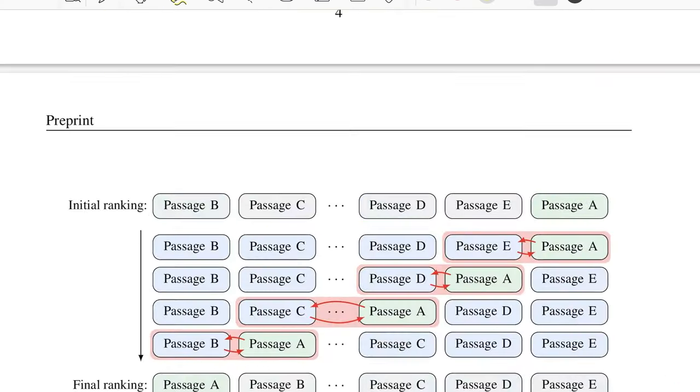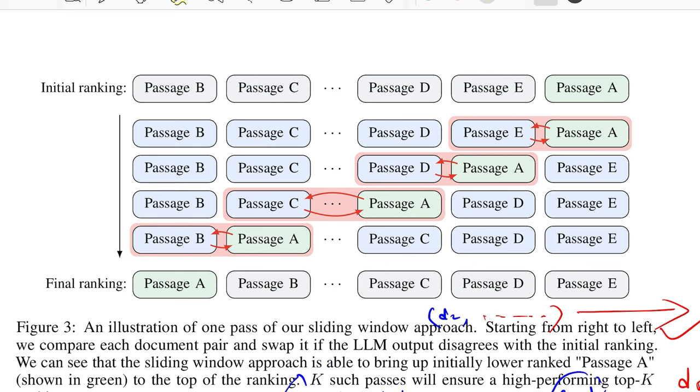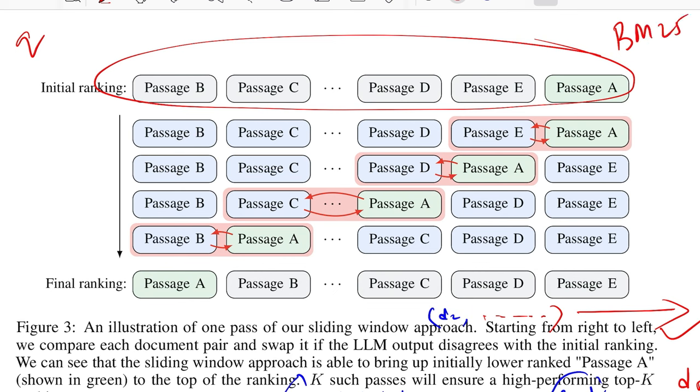This is an illustration of one pass over the entire list. Let's say you had query Q and these were the list of passages that you had, which is from B, C, something between, then finally D, E, A. This is an initial ranking that you get, let's say, from BM25. They have a sliding window of length two, which is marked in red over here, and a stride of one, which means it moves to its left by one cell.